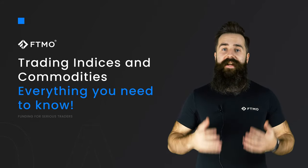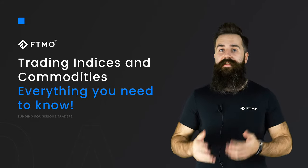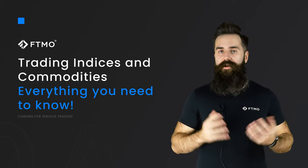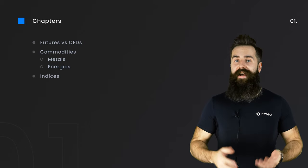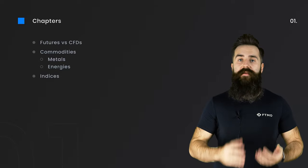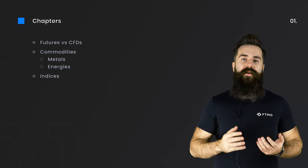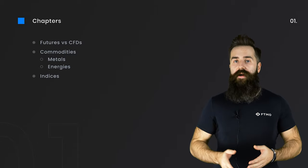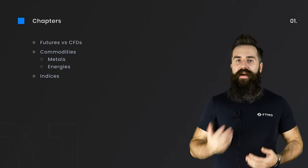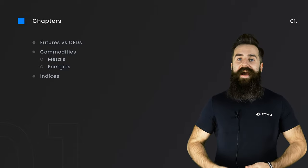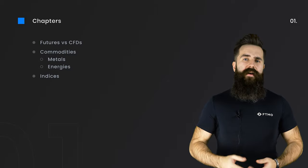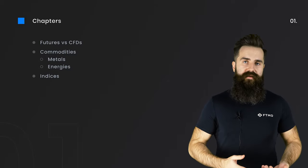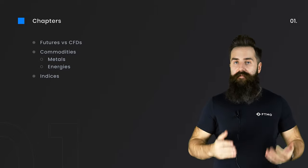Hello traders. In this video we will look at different commodities and equity indices and their specific behaviors. Gold, Nasdaq, DAX, or crude oil are extremely popular instruments that are traded in our FTMO platform. Compared to Forex, where we separate instruments into three brackets — majors, minors, and exotics — all of them have the same trading hours and sessions. Things are a little more complicated in commodities and indices, and that is exactly what we will cover in this video.